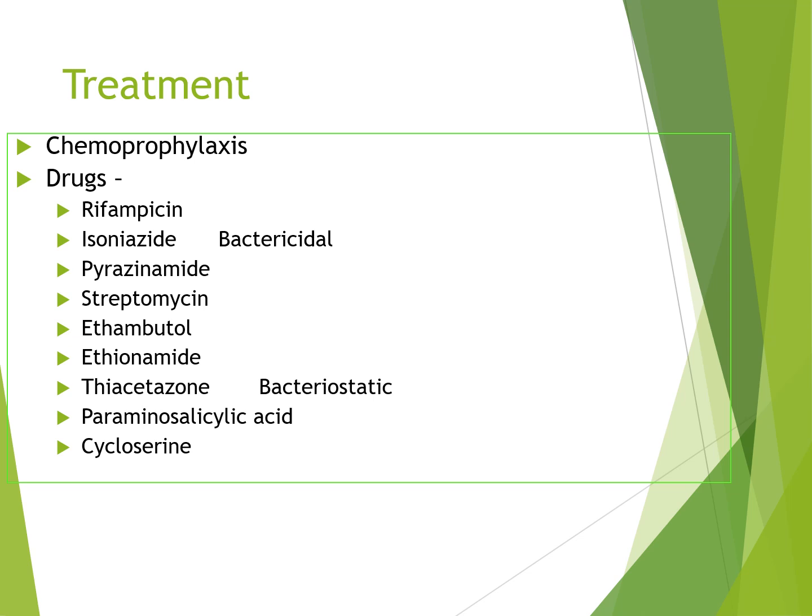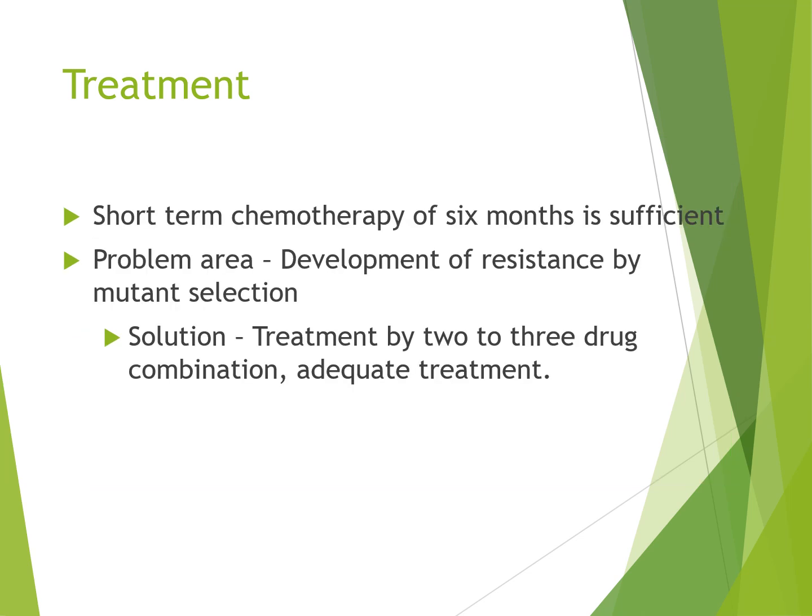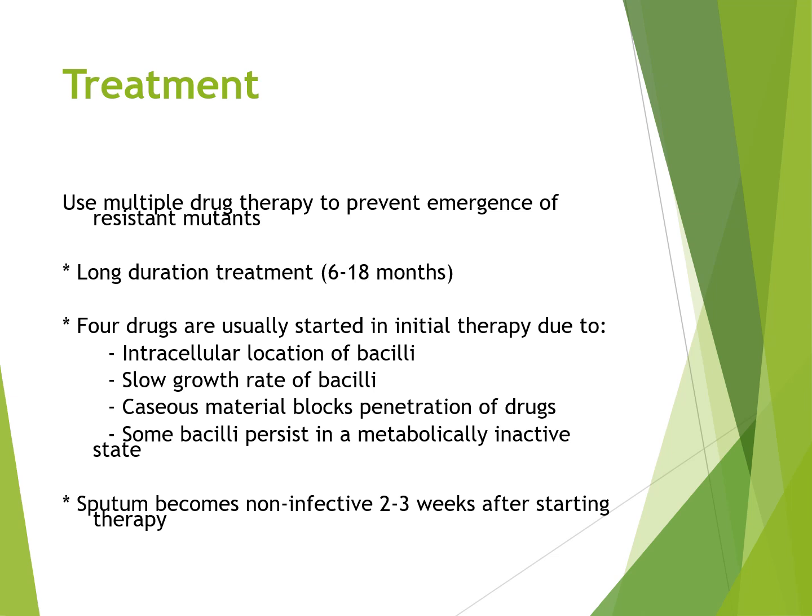For treatment, there is chemoprophylaxis. The drugs used are rifampicin, isoniazid (bactericidal), pyrazinamide, streptomycin, ethambutol, ethionamide, thiacetazone (bacteriostatic), and para-aminosalicylic acid and cycloserine. Short-term chemotherapy of six months is sufficient. The problem area is development of resistance by mutant selection, so the solution is treatment with two to three drug combinations. Four drugs are usually started in initial therapy due to the intracellular location of bacilli, slow growth rate, caseous material blocking drug penetration, and some bacilli persisting in a metabolically inactive state. The sputum becomes non-infective two to three weeks after starting therapy.